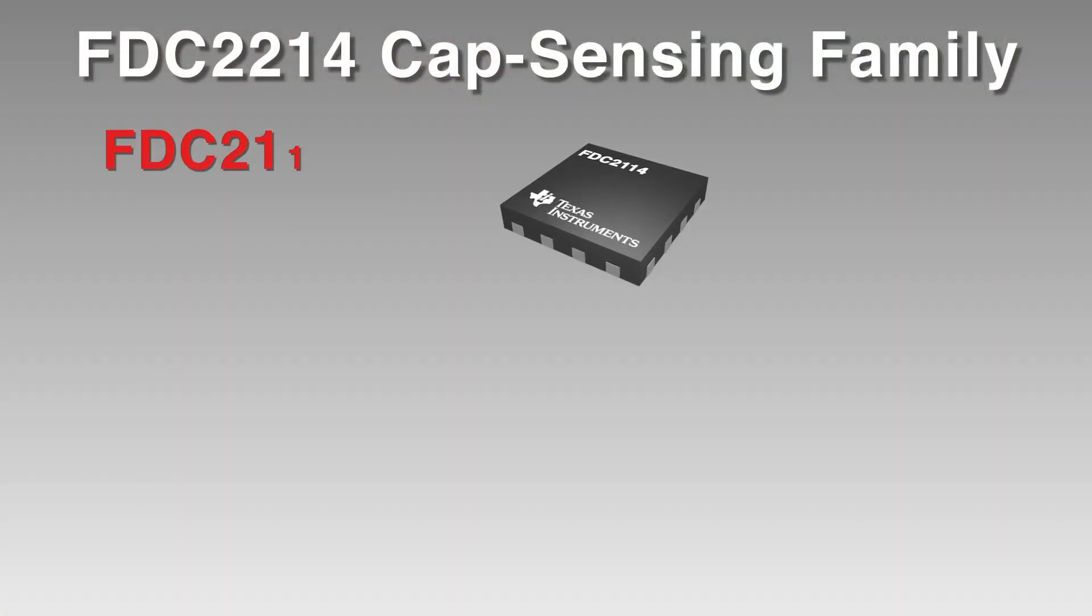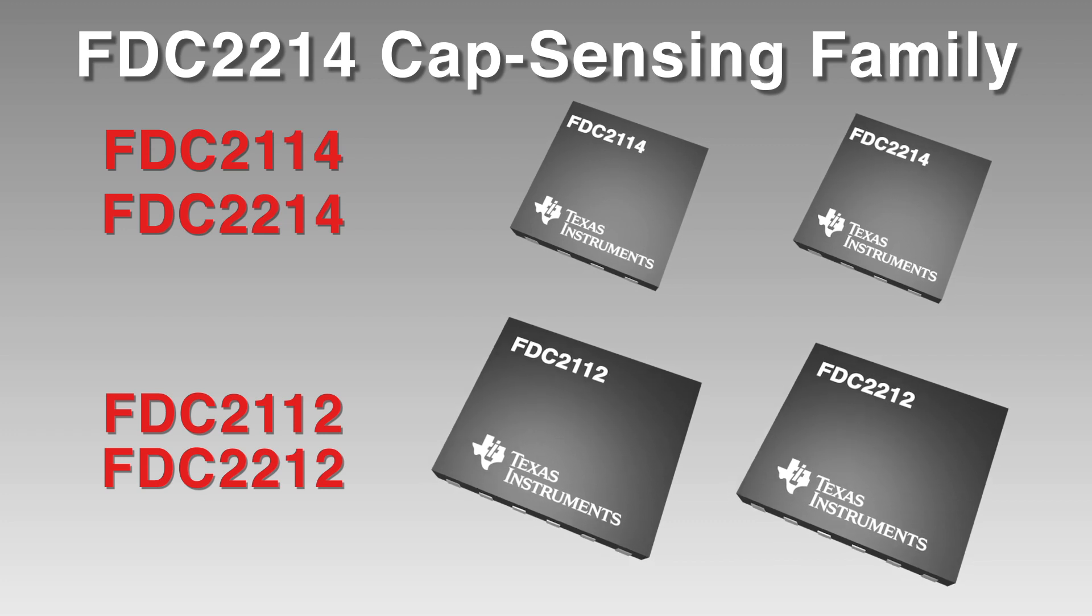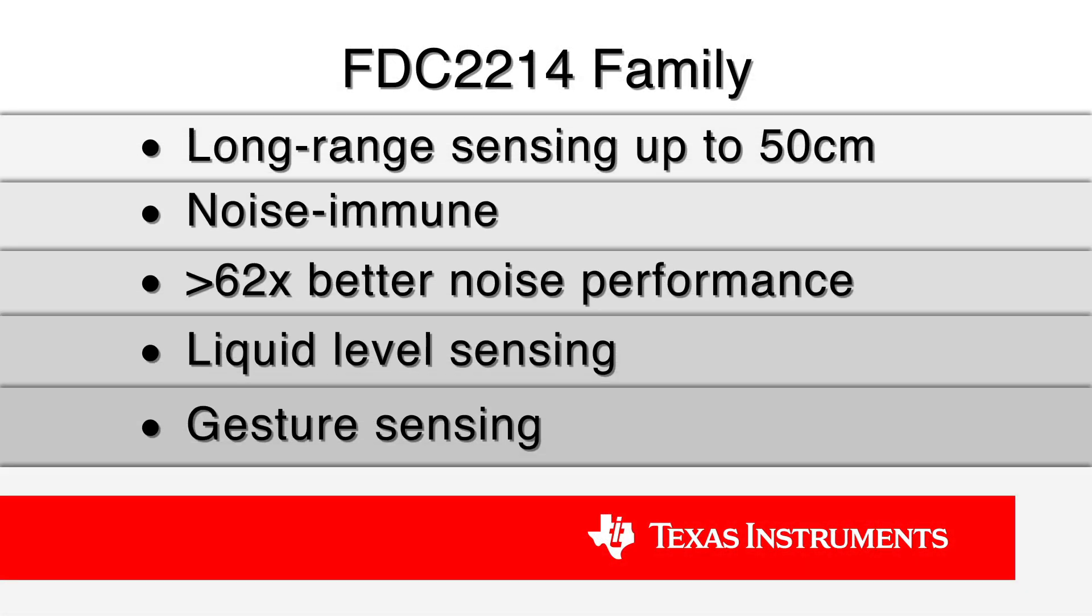The FDC2214 cap sensing family of converter products is unique and is the industry's first noise-immune capacitive sensing solution. The FDC2214 family enables capacitive sensing applications like long-range human body sensing and liquid-level sensing in a real-world environment with interferences like fluorescent lights, radio signals, motor noise, and other sources of EMI or noise.